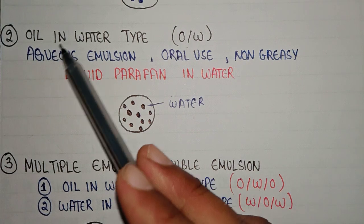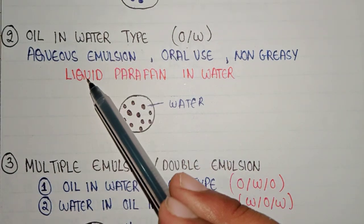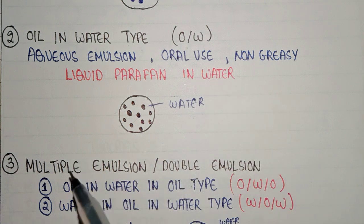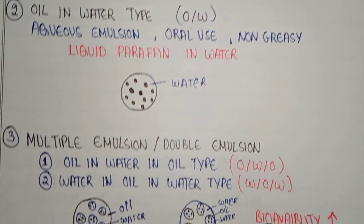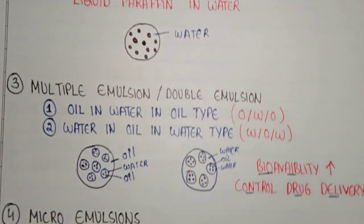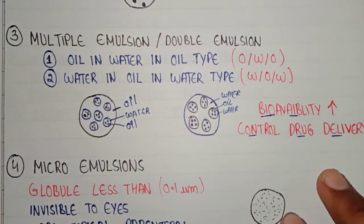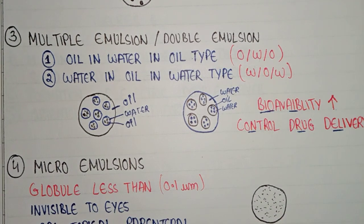Oil-in-water emulsion is used for oral use and has a non-greasy nature. An example of this type is liquid paraffin in water.